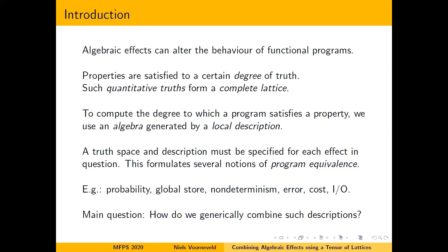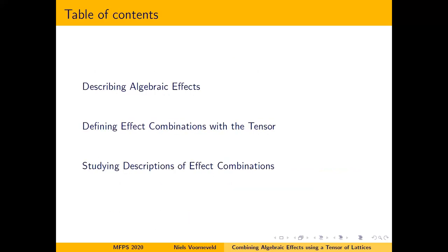This is the overview of the talk. First we'll dive in and talk about how we can use notions of truth and algebras to describe effects, defining what an effect description is. In the second part we'll define how to combine such descriptions, which uses the tensor of complete lattices. In the third part we'll look at what happens when we apply this method to examples of effects and argue why it gives natural descriptions of combinations.